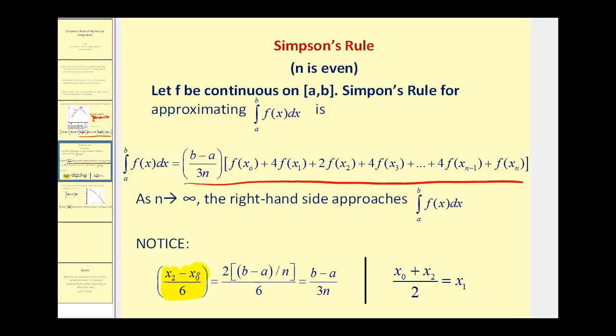On the previous screen, we were dealing with one parabola, and the coefficients of the functions were one, four, one. When we use two parabolas, each has coefficients one, four, one — but we'd use f of x sub two twice, so the combined pattern becomes one, four, two, four. If we continued adding more parabolas, the interior points get a coefficient of two and the midpoints get four, then ending with one. So the full coefficient pattern is one, four, two, four, two, four, one — and that's where these coefficients come from.